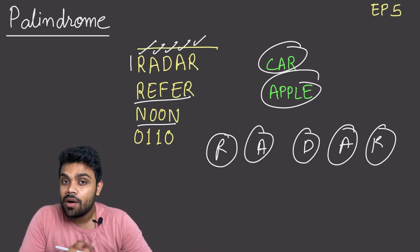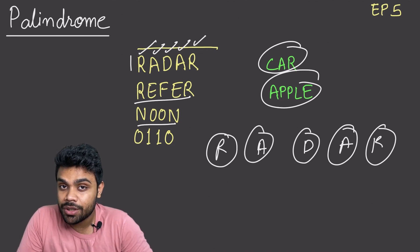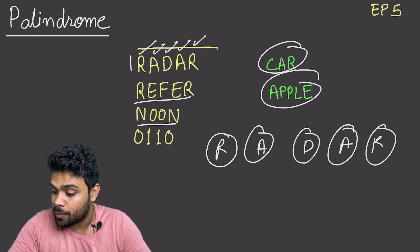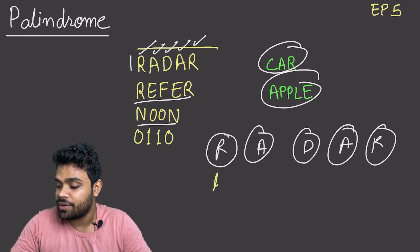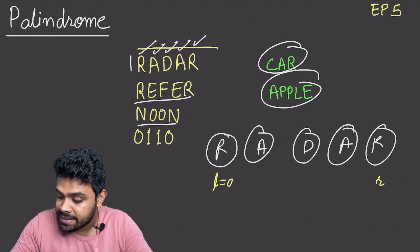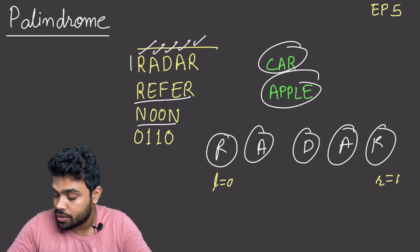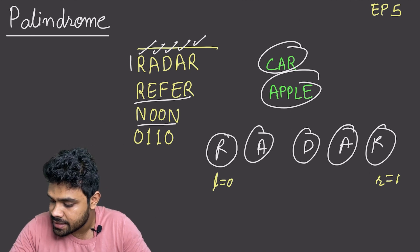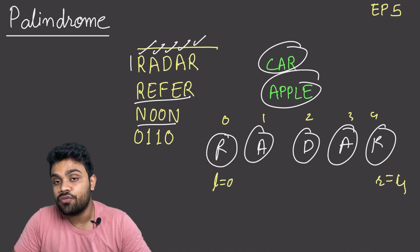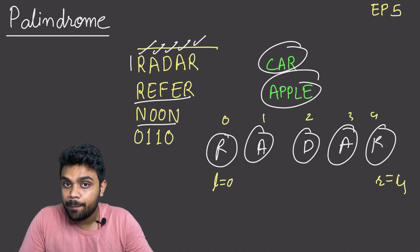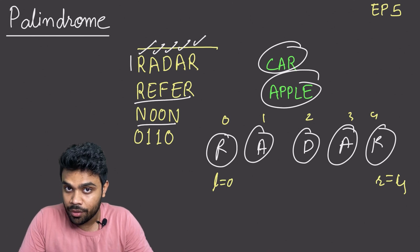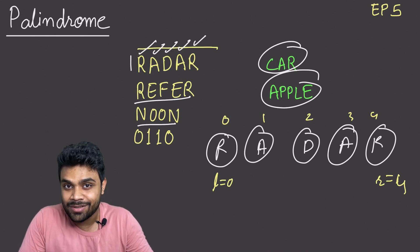This gives us the intuition for using a two-pointer approach. It's a very simple approach — we keep two pointers, one on the left side and one on the right side. The left pointer starts at index zero, the right pointer starts at index four (for 'radar'). We compare whether the character at index zero is the same as the character at index four. If they are not equal, it is not a palindrome.